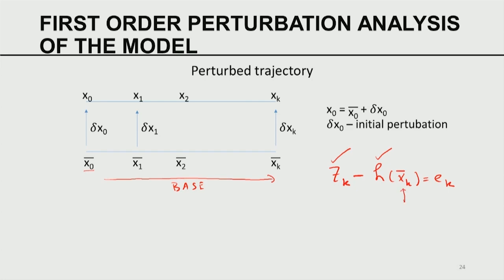The only way to change xₖ is to change x₀, since xₖ depends on x₀ through the model. So x₀ is called the control element — by changing the initial condition x̄₀, we change xₖ, and if we change xₖ, we can hope to change the forecast error. With this in mind, we change the initial condition by adding a correction δx₀ to x̄₀, giving the new initial condition x₀ = x̄₀ + δx₀. Here δx₀ is called the initial perturbation.